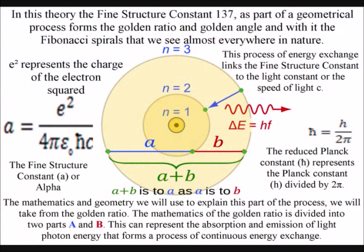The golden ratio is divided into two parts a and b. This can represent the absorption and emission of light photon energy that forms a process of continuous energy exchange.